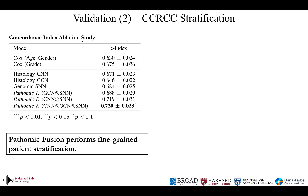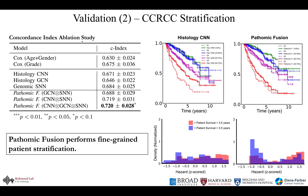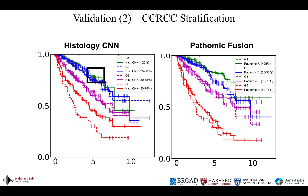On clear cell renal cell carcinoma, we observe similar results to glioma, where Pathomic Fusion is able to perform fine-grained stratification of patients with respect to the Furman grading system. In the survival curves, we visually see that Pathomic Fusion is able to disentangle the four risk groups, whereas the unimodal model confuses grade 1 and grade 2 tumors as shown in the black bounding box. Interestingly, Pathomic Fusion is the only neural network that achieves statistical significance, suggesting that multimodal learning benefits fine-grained patient stratification.